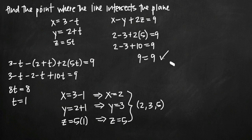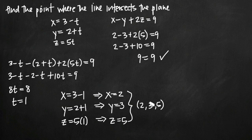2 minus 3 is negative 1, plus 10 is positive 9, so we get 9 equals 9 — that is true. The fact that we got 9 equals 9 tells us that the point (2, 3, 5) lies in this plane. We know this point lies along the line defined by the parametric equations because when t equals 1 we get the coordinate point (2, 3, 5). Since the point lies on both the line and the plane, we confirm that (2, 3, 5) is the point of intersection.